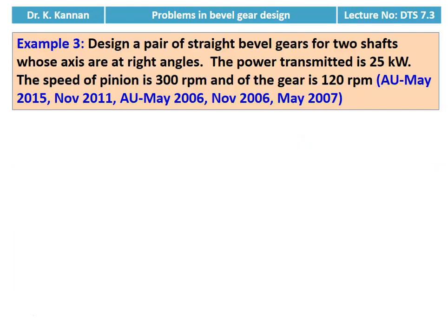Example 3: Design a pair of straight bevel gears for two shafts whose axes are at right angles. The power transmitted is 25 kilowatt. The speed of the pinion is 300 rpm and the gear is 120 rpm. This question appeared in May 2015, November 2011, May 2006, November 2006, and May 2007.